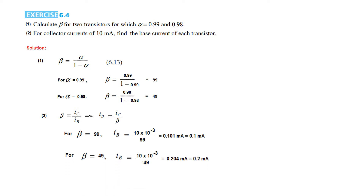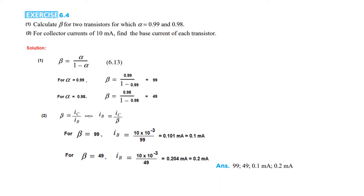For the second transistor, we only change the beta value, and IB will be 0.2 milliampere. So this is easy. This is the answer given in the book — two values of beta and two values of base current.